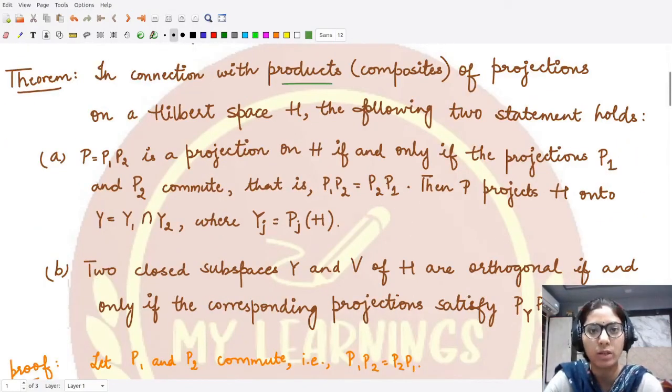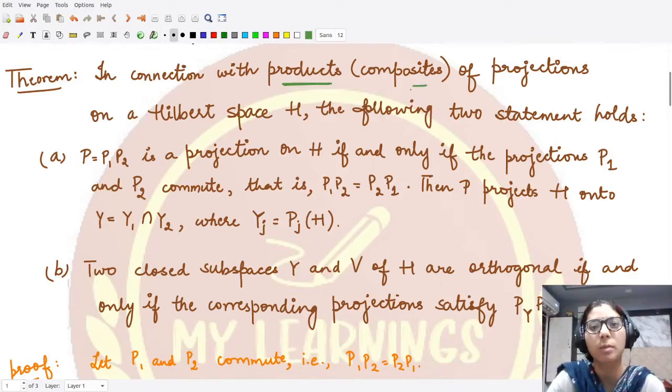In connection with products or composites of projections on a given Hilbert space, the following two statements hold. Product in case of operators is basically composing two operators together. The first statement tells us that if we have the product of two projections, calling it P, if this is a projection on H which is the given Hilbert space...